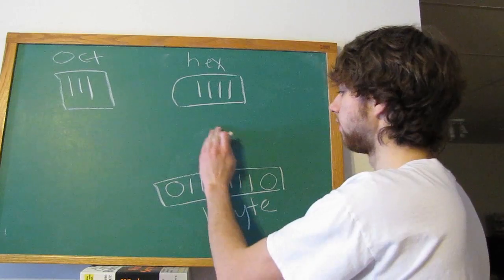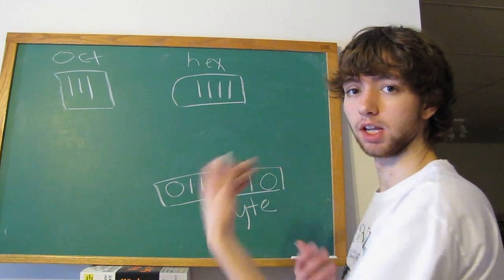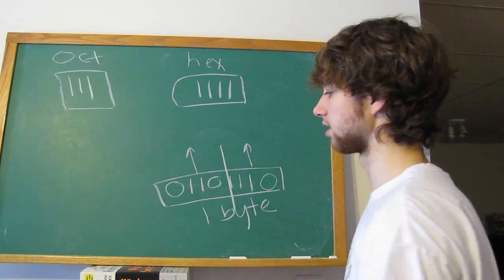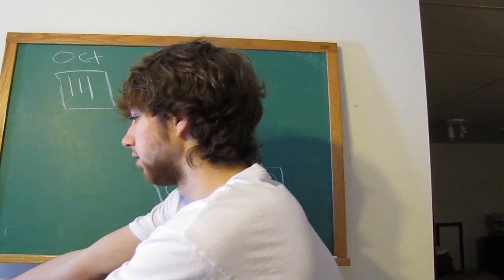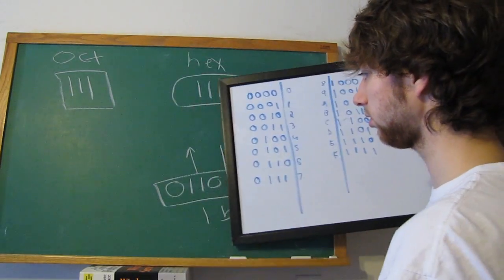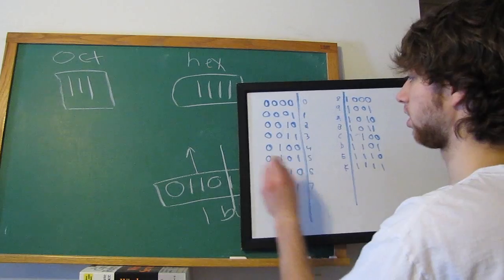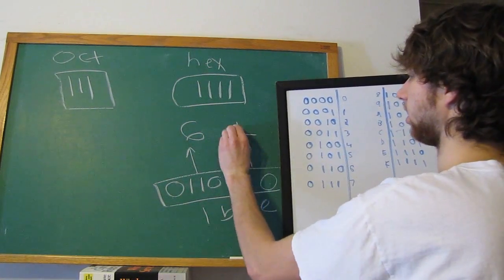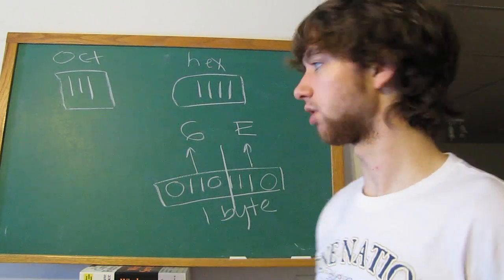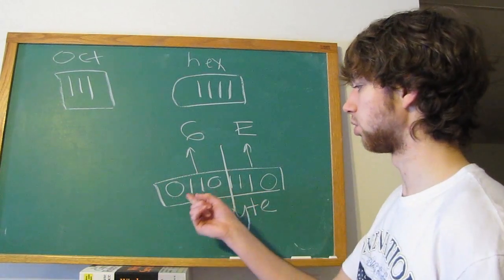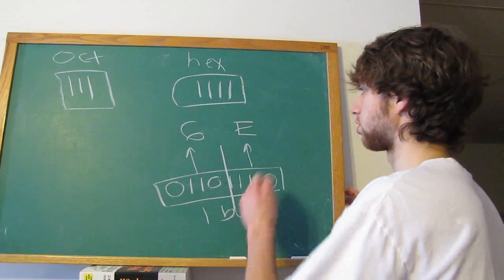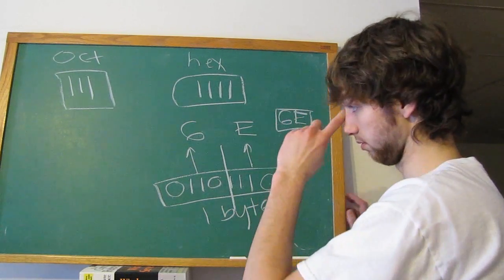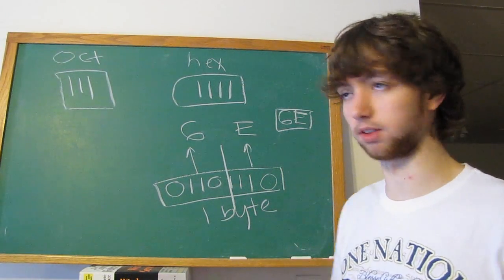You can represent 4 bits using a hexadecimal number. So you can break this up into groups of 4 and say, oh this is a number and this is a number. And I still have a chart here using hexadecimal. So 0110 is 6. 1110 is E. So you can represent this strand of binary, 01101110, just using 6E. And you can illustrate that it's hexadecimal using 0x or something like that.